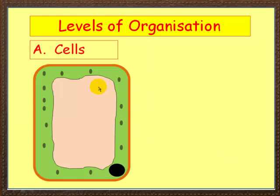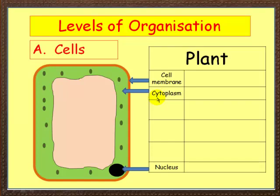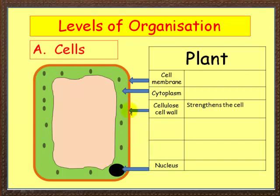Let's compare that with a plant cell. Some things are in common with the animal cell but some are quite different. They share a cell membrane, cytoplasm, and a nucleus. What's different: around the outside of the plant cell you've got a cellulose cell wall. This is fully permeable and it strengthens the cell — it's made of cellulose, a very strong substance.